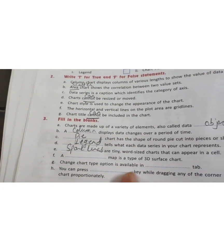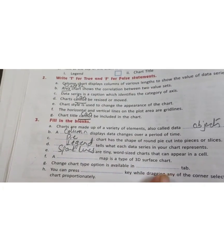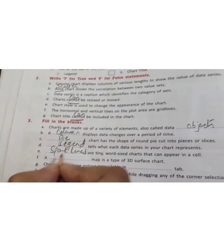A topography map is a type of 3D surface chart.